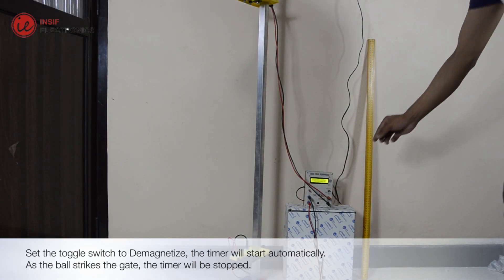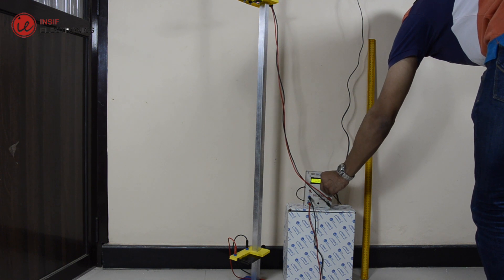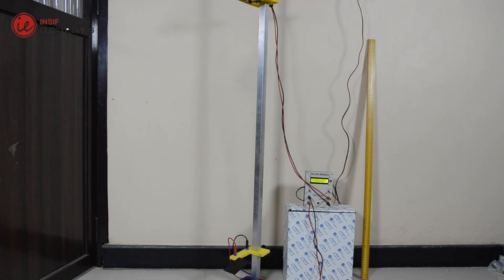Set the toggle switch to demagnetize, the timer will start automatically. As the ball strikes the gate, the timer will be stopped.